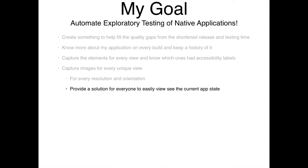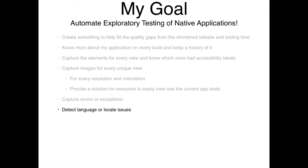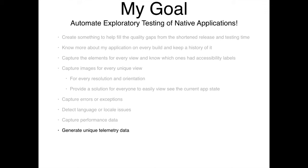I wanted to provide an easy solution for people to see exactly what the current state of the app was, so product owners, designers, and QA people could see what the latest build looks like without installing it on their phone. I also wanted to capture any errors or exceptions that occurred, find any language or locale issues, capture performance data while crawling, and generate unique telemetry data. A crawler or monkey tester gives you more robust telemetry data than consistently running the same scripted tests.